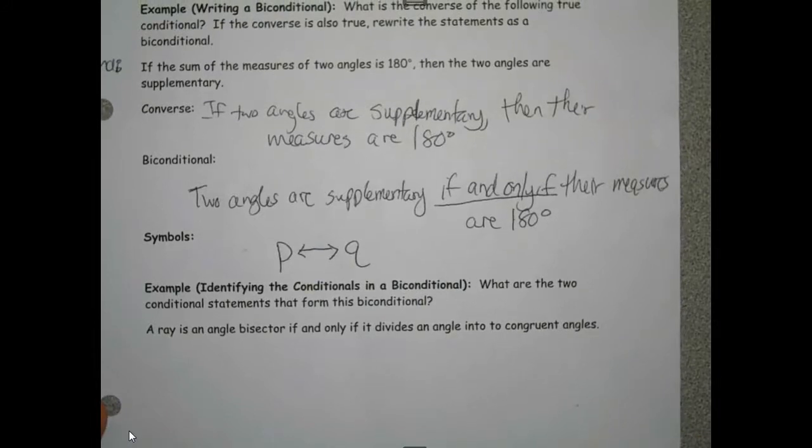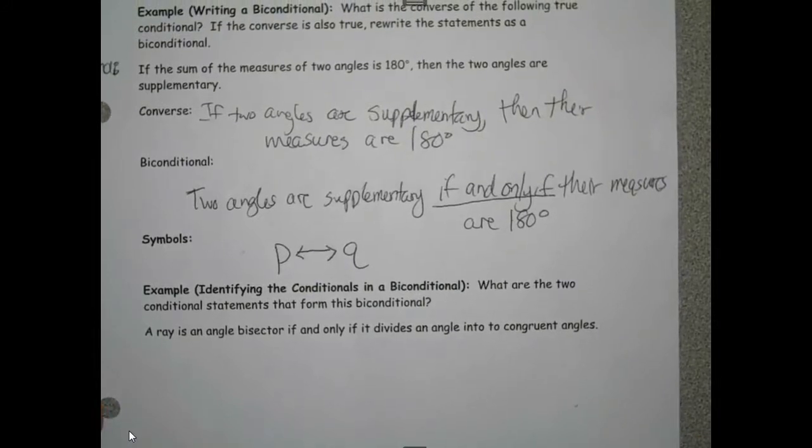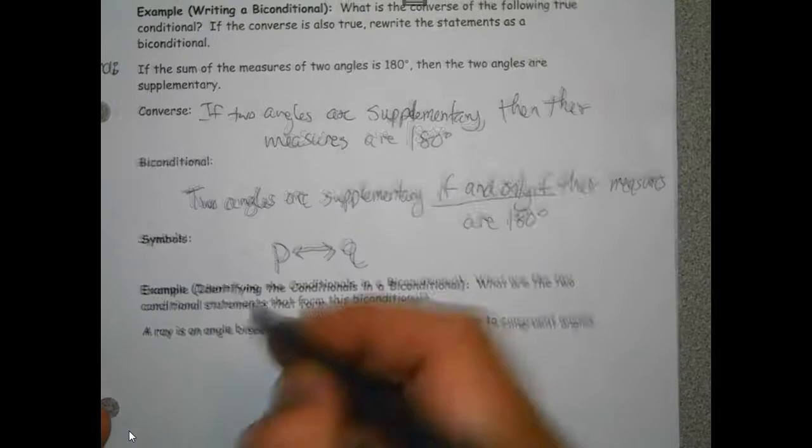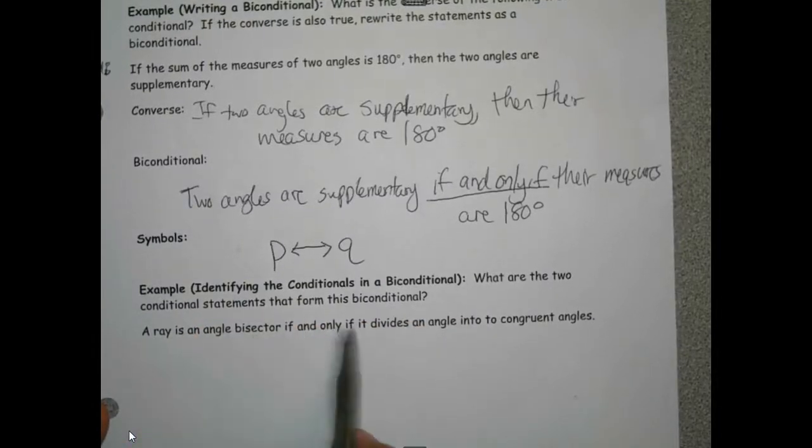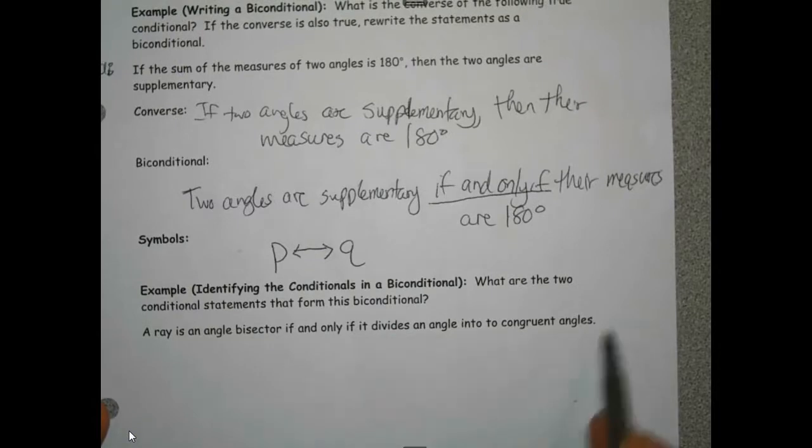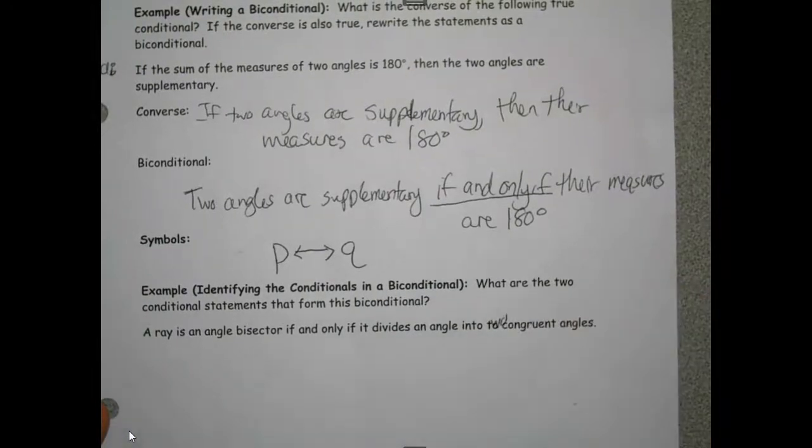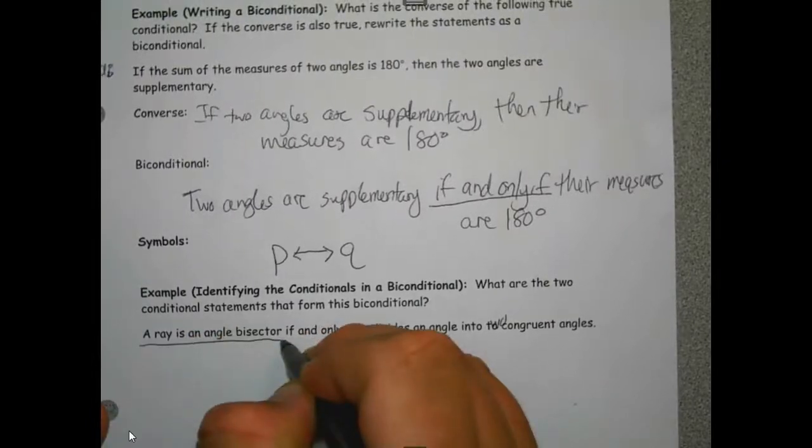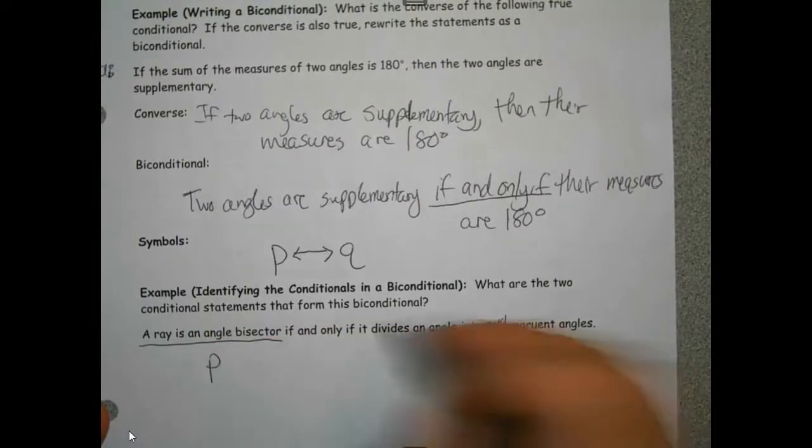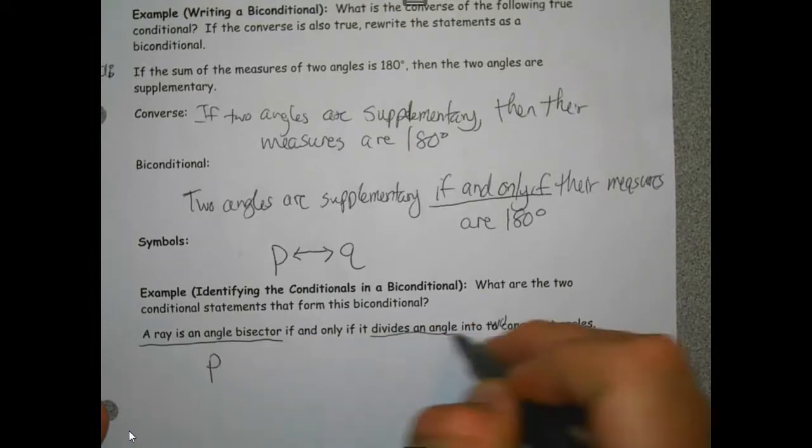So I'm going to show you the two parts. This statement says: a ray is an angle bisector if and only if it divides an angle into two congruent angles. Obviously, a ray is an angle bisector is our P, and divides an angle into two congruent angles is our Q.